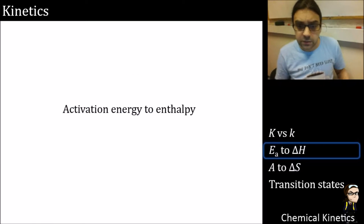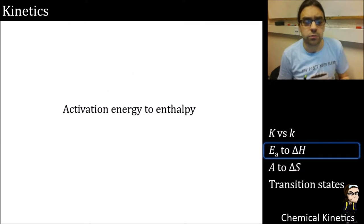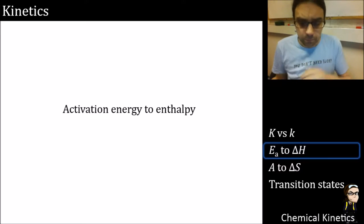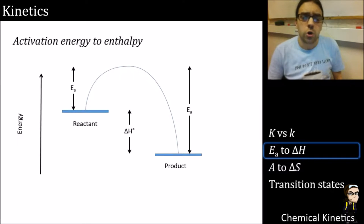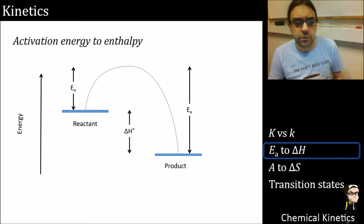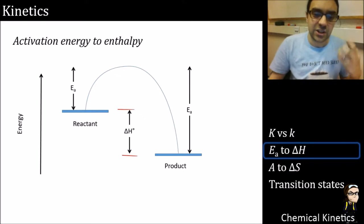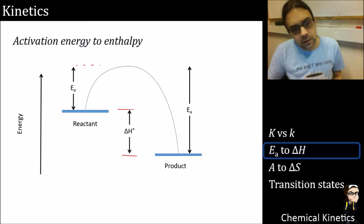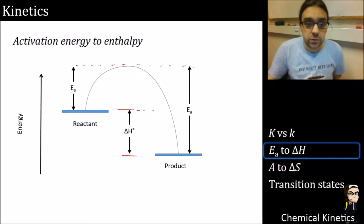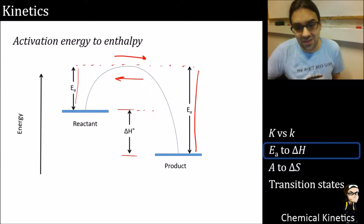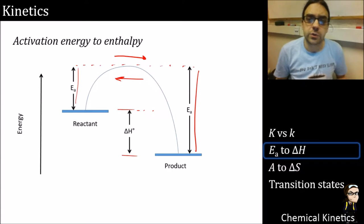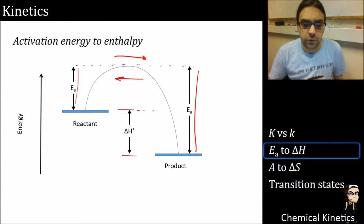Activation energy to enthalpy - this is the important thing you need to be aware of. The answer: delta H, the difference between reactant and product in terms of enthalpy, is equivalent to the difference between the activation energies. There are two reactions - one goes forward with one activation energy, one goes backwards with another - and the difference between them is delta H of the reaction.